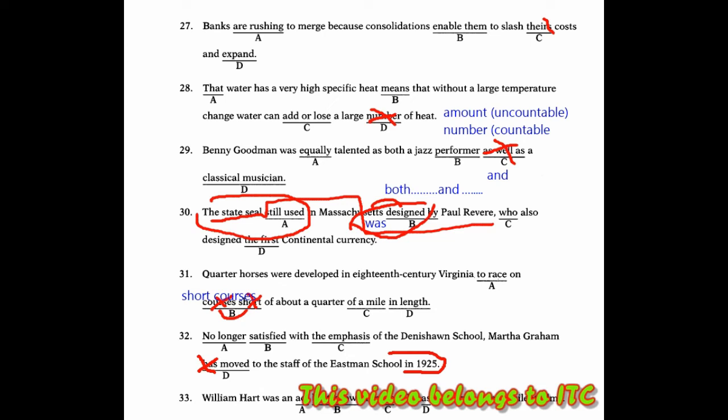Then we look at number 33. William Hart was an actor. The error here is it should become 'an actor'. The part here should be 'an actor'. An actor, meaning one actor. It should be 'an actor' here. An actor that who is best known, who is best known, for his roles, for his roles, as western heroes, as western heroes, in silent films, in silent films. That is the explanation for number 33.